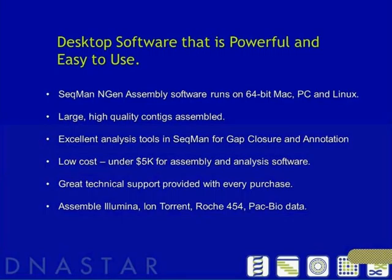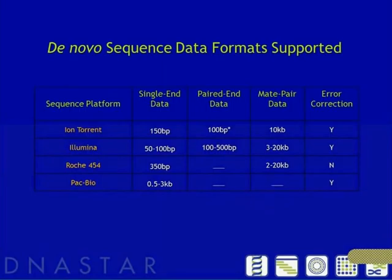One of the first questions from new customers is how powerful can this software be if it's designed to run on a desktop computer. We set out to develop a human genome desktop assembler that could, on a relatively modest computer, assemble several billion reads at deep coverage in under 24 hours — and we have that assembly capability. I should point out that in a de novo assembly, there are often iterations between doing a de novo, closing some gaps, and then using those contigs as reference sequences in confirmation assemblies. It's important to have this fast assembler as well.